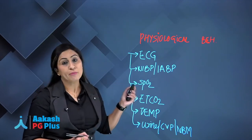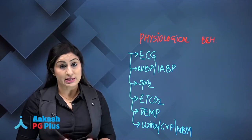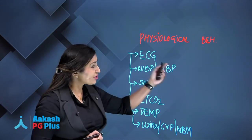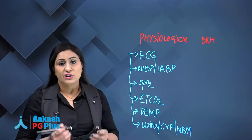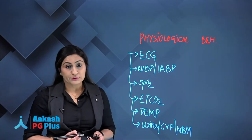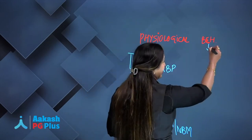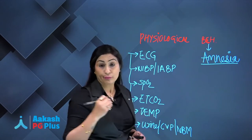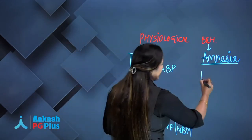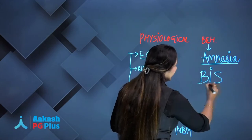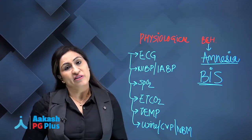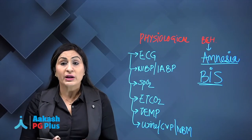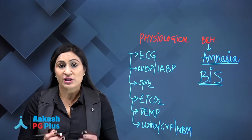Some of these are mandatory monitors given by the American Society of Anesthesia which need to be followed at all times. However, measuring the behavioral status of the patient is challenging. It is difficult to measure amnesia directly, so we measure it by measuring the depth of anesthesia using the bispectral index, or BIS. Intraoperative awareness is defined as explicit recall of events that transpired during the conduct of general anesthesia.